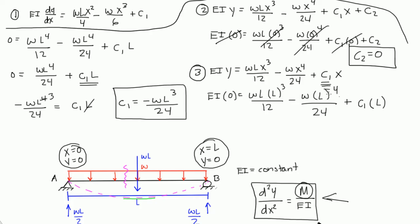In the next video, we'll take these two constants and plug them back into equations 1 and 2. Those two equations should give us the slope and deflection at any point along the beam. See you in the next video.